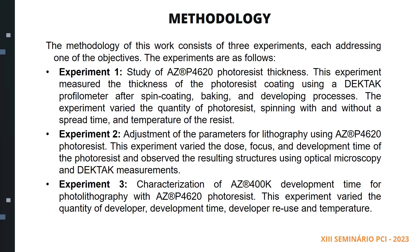Experiment 2: Adjustment of the parameters for lithography using AZP4620 photoresist. This experiment varied the dose, focus, and development time of the photoresist and observed the resulting structures using optical microscopy and DECTAC measurements. Experiment 3: Characterization of AZ-400K development time for photolithography with AZP4620 photoresist. This experiment varied the quantity of developer, development time, developer reuse, and temperature.